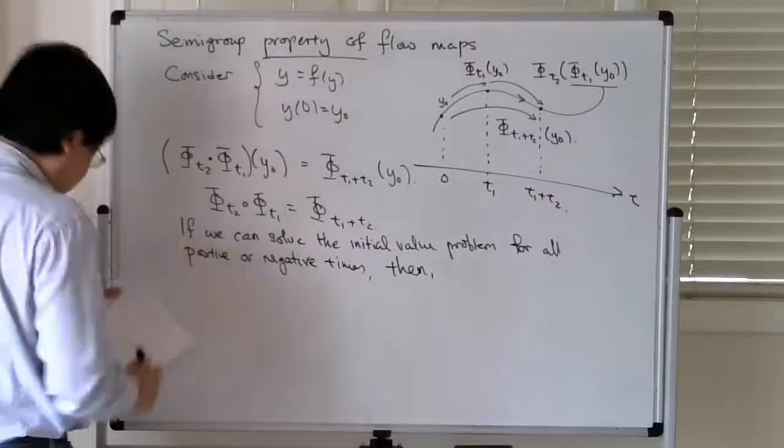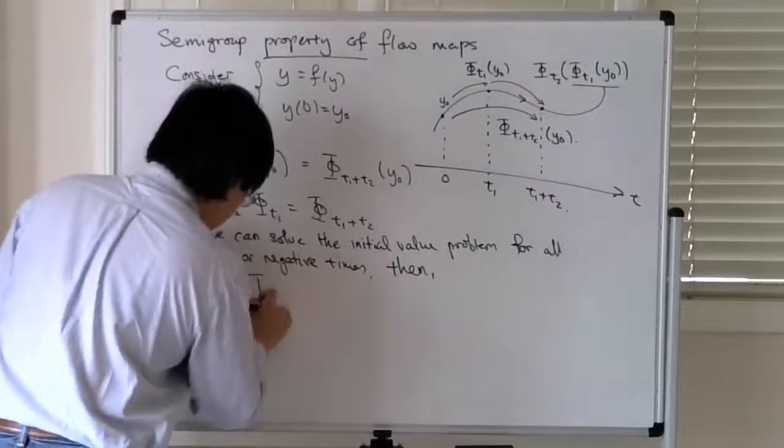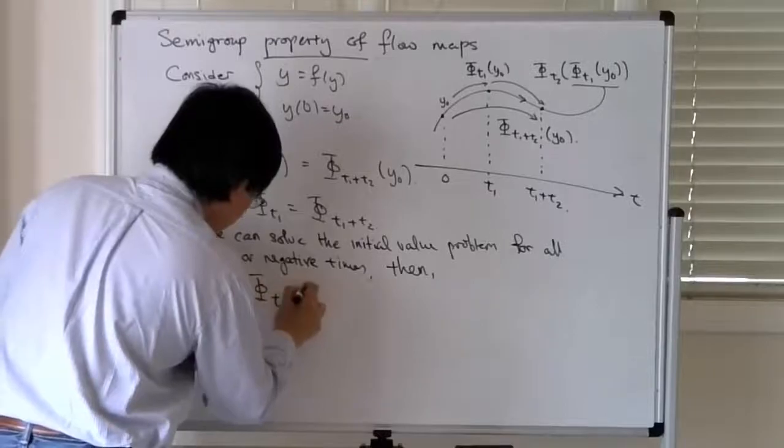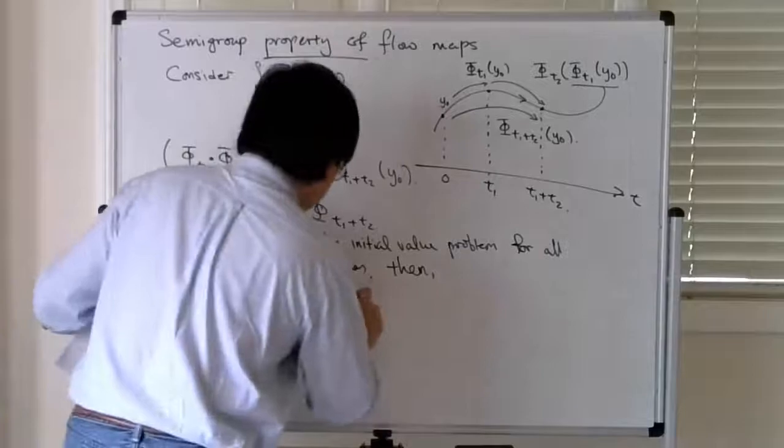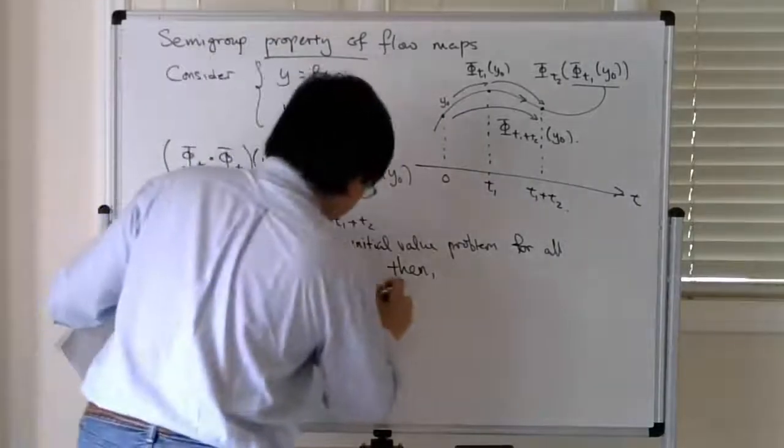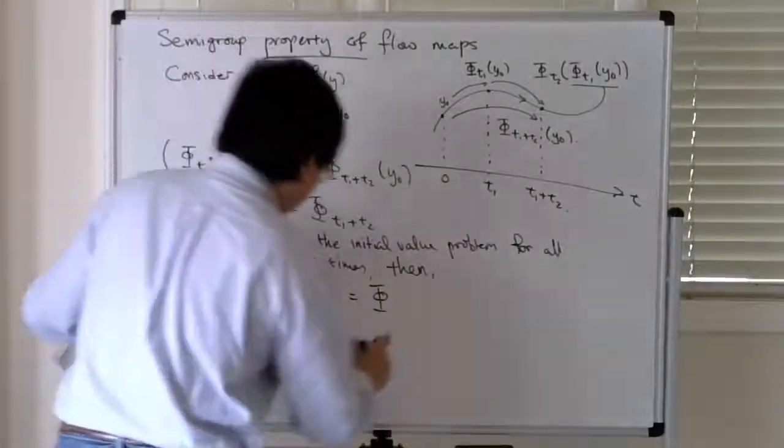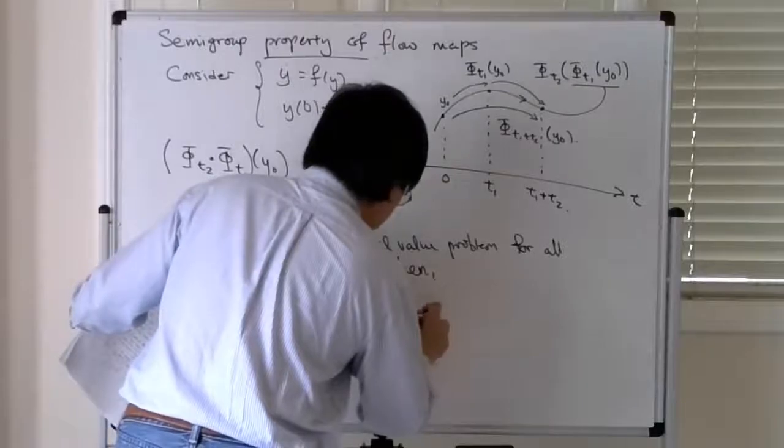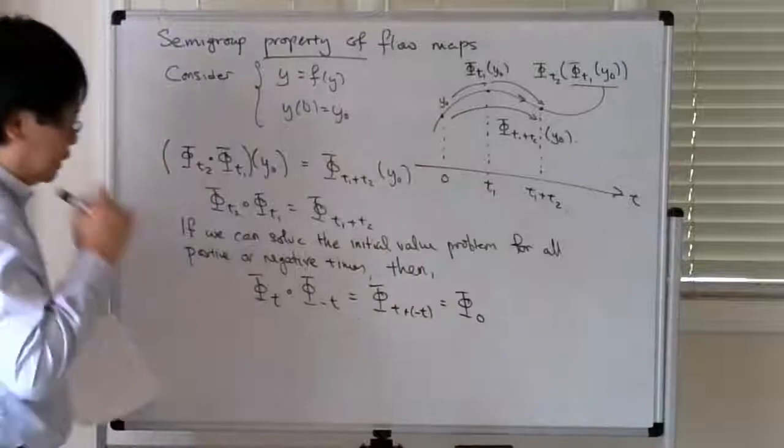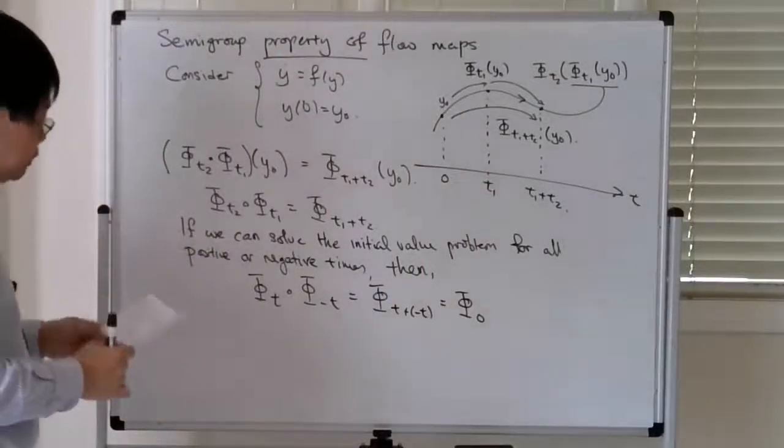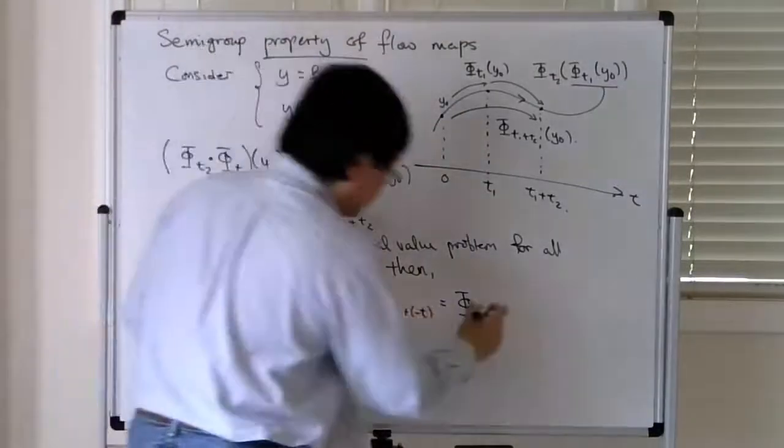So a consequence of this basically is that the flow by a positive time composed with the flow by a negative amount of time is equal to the flow of the sum of those two times, which is the flow associated with time 0, and of course this is nothing more than the identity map.